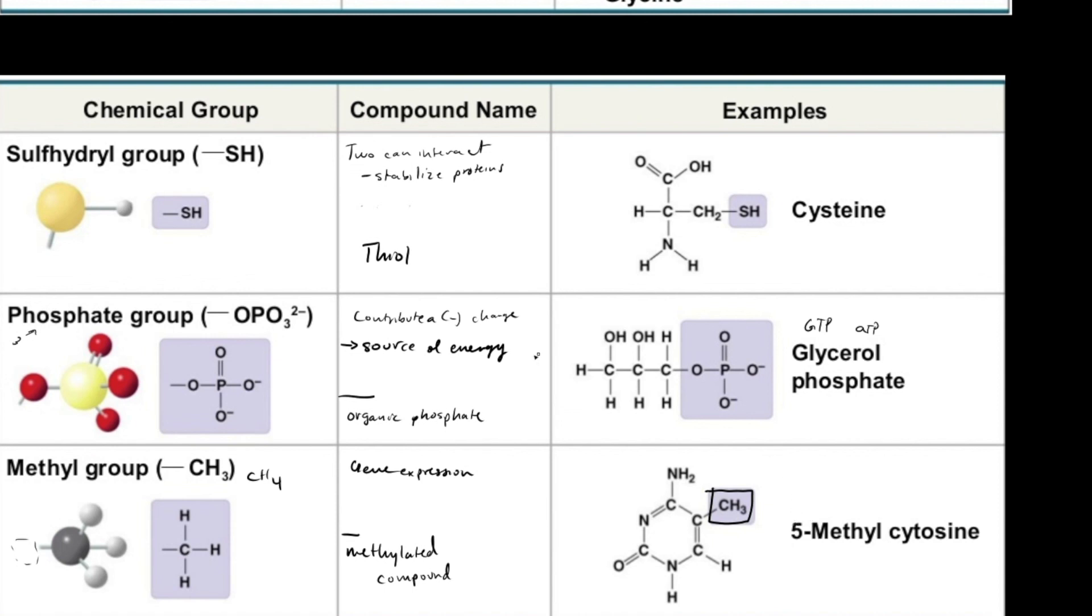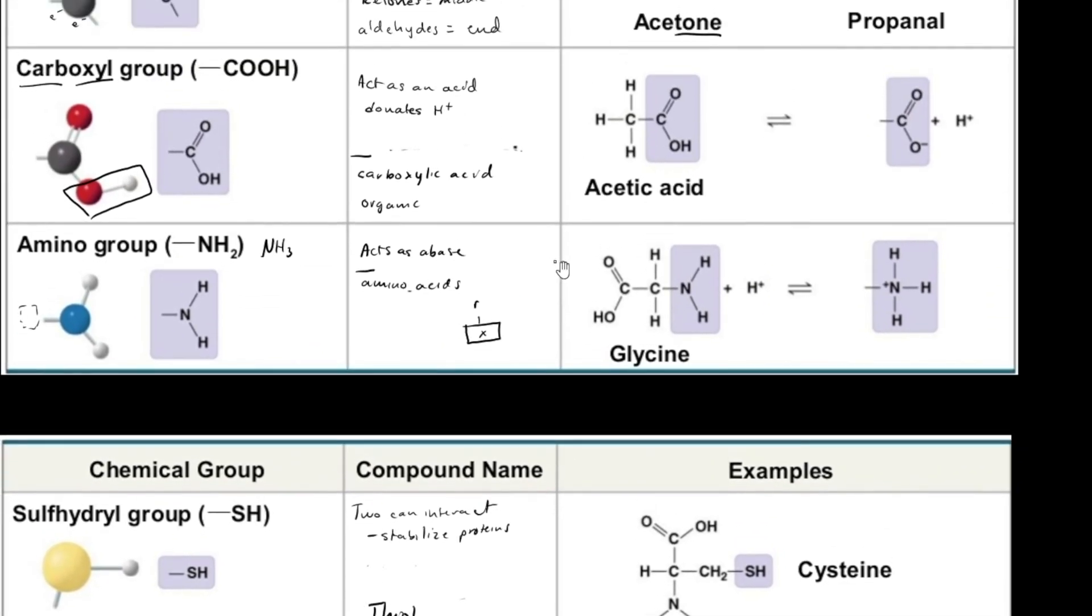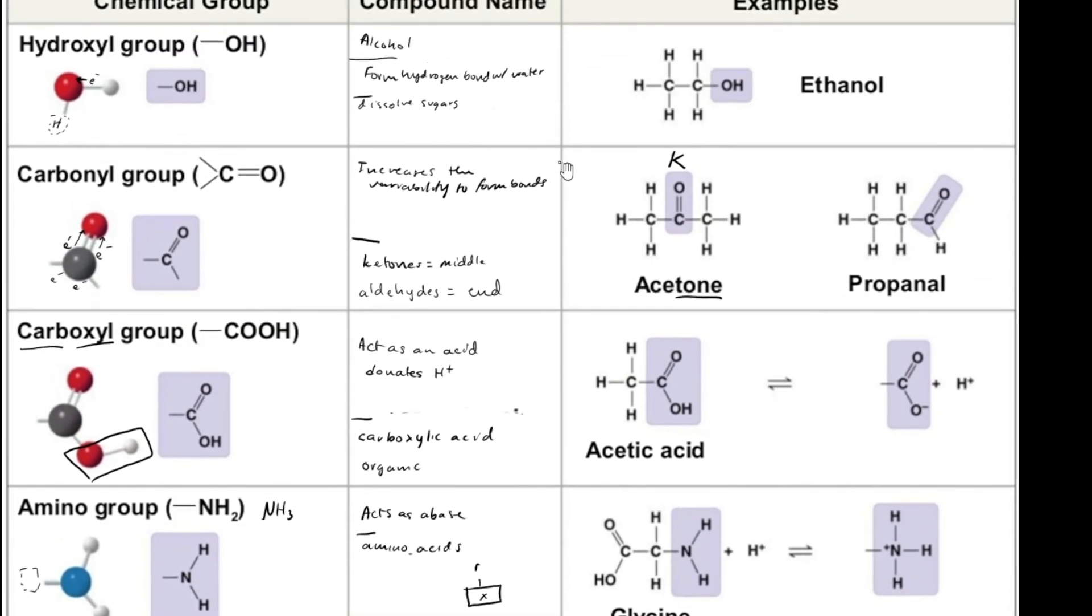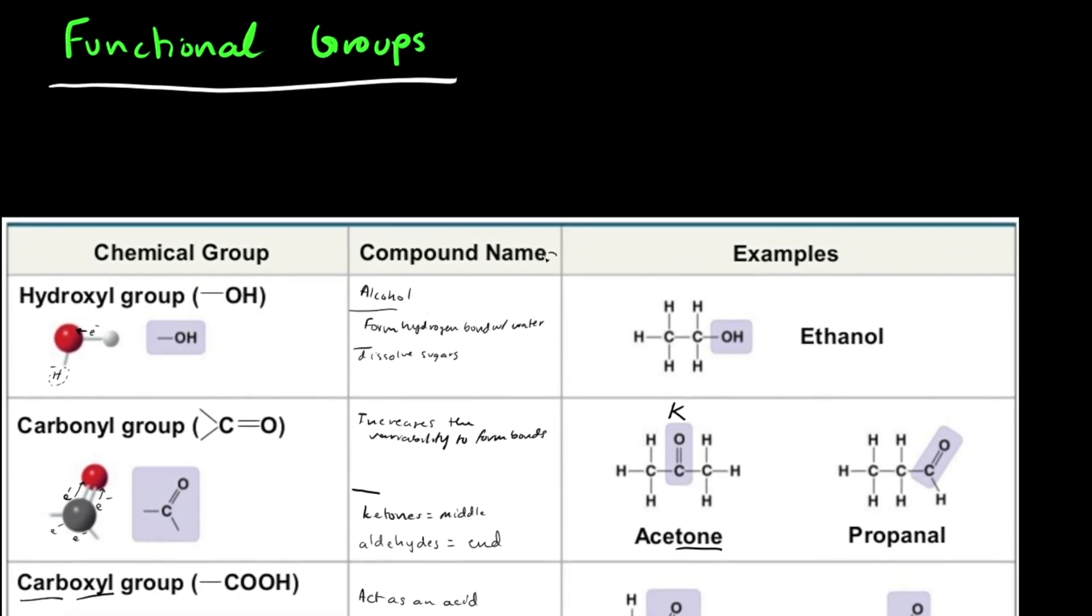And now, from what we've seen within these seven functional groups, we've seen its function, we've seen its shape, and we've seen examples in how it affects our human body and really in our day-to-day lives, showing the importance, the viability, and the variability between the functional groups within our body.